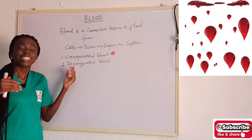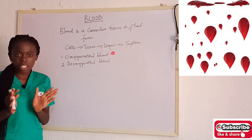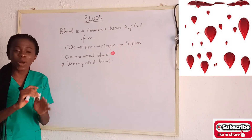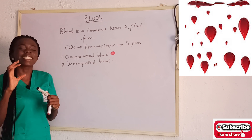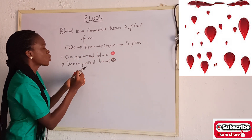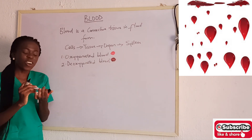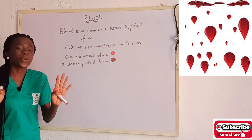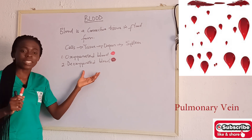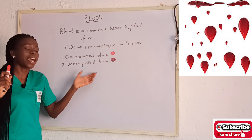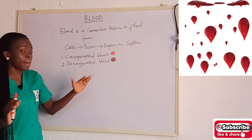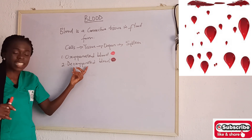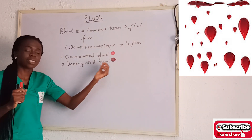The deoxygenated blood contains little oxygen with plenty of carbon dioxide. It has a lot of waste in it and is no longer fresh, so this blood is dark red. The deoxygenated blood is found in all veins except the pulmonary veins. To summarize: oxygenated blood has plenty oxygen and nutrients, it is bright red; deoxygenated blood has little oxygen, so it is dark red.